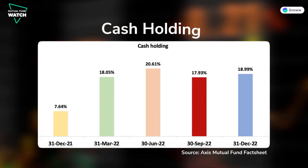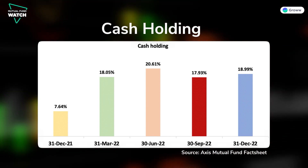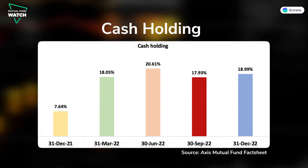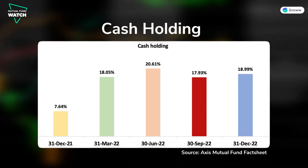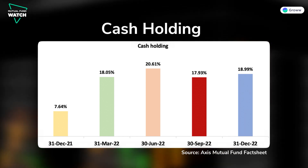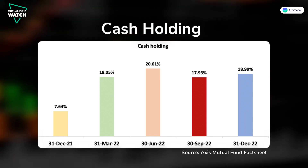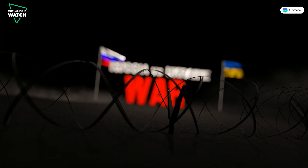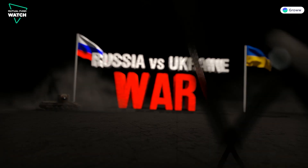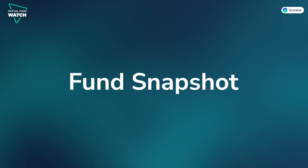Axis Mutual Fund manages its cash holdings through different market cycles. In January 2022, the fund's cash holding was 7.64%, meaning 92% was invested in equity. As market conditions deteriorated, cash holdings increased to 18%. In June 2022, cash holding reached 21%. Then in the second half of the year, the fund started investing in equity again. However, due to the geopolitical crisis and the Russia-Ukraine war, equity holdings were further reduced.